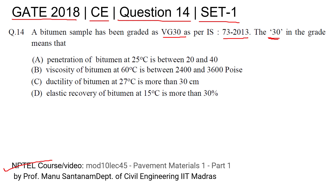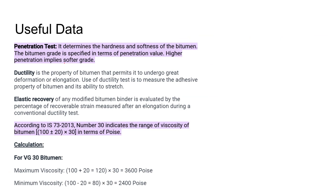The answer options include penetration value, viscosity, ductility, or elastic recovery. Some useful data related to this grading: the penetration test is used to know the hardness or softness of bitumen. The bitumen grade is specified in terms of penetration value — the higher the penetration, the softer the grade.